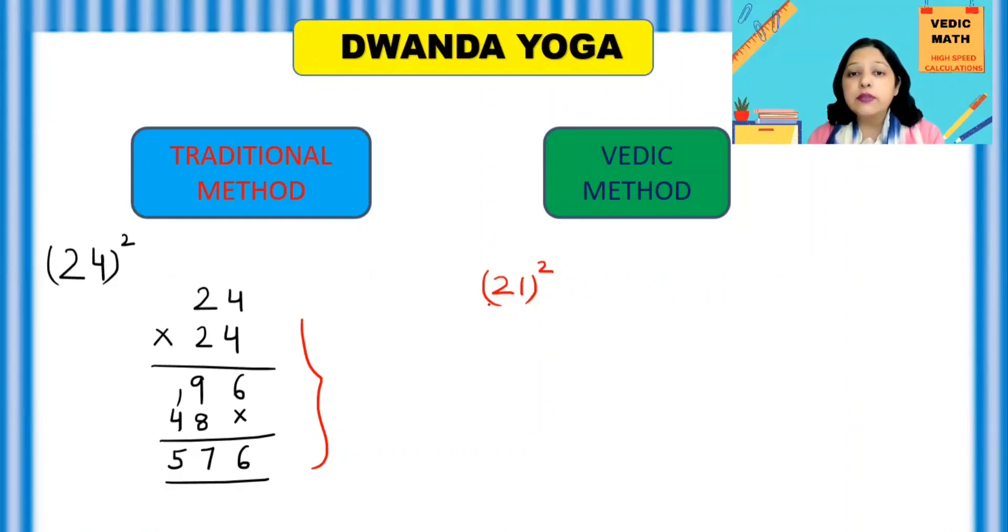you write the square of this 2, square of 2 is 4, square of 1 is 1. Okay, so you write 4 here, leave this space as it is and write 1 at the end. So left part 2 square will be 4, right part 1 square will be 1.